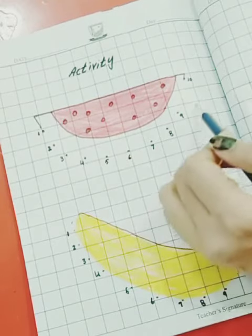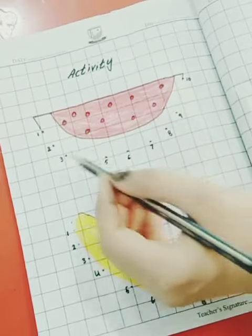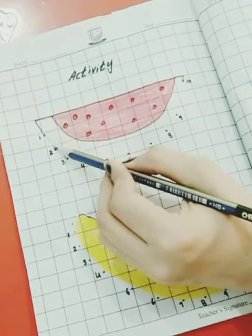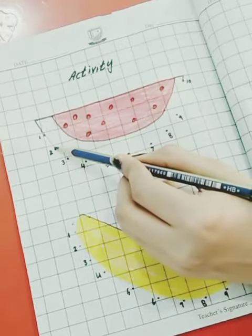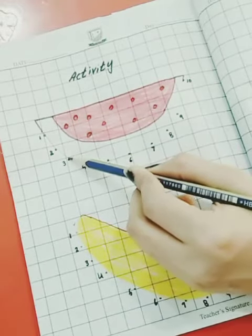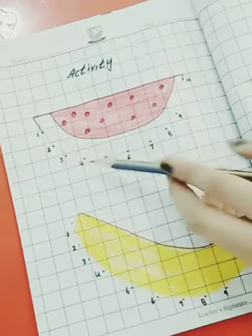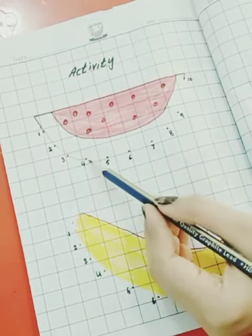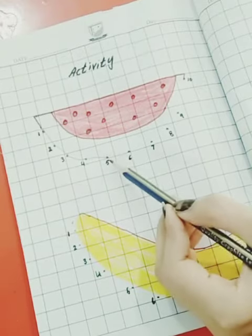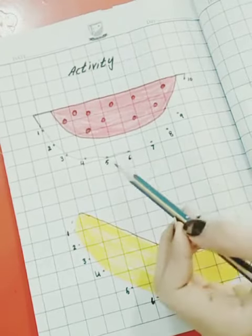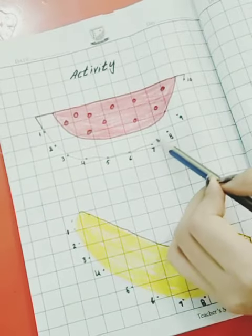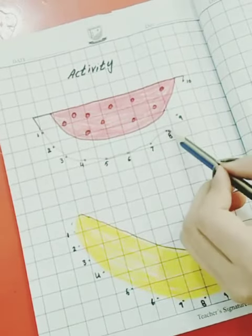Let's start. We start from one, then connect to two. Then two to three, and then three to four. Four to five, five to six, and six to seven. Seven to eight, eight to nine.